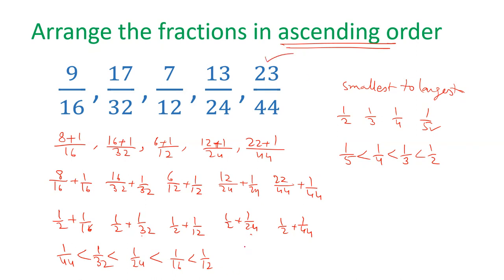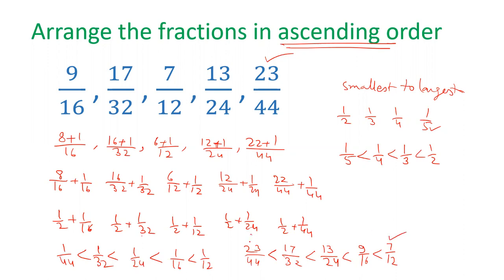So 1 by 44 plus half gives 23 upon 44. The next one is 17 by 32, then 13 by 24, then 9 by 16, and finally 7 by 12. The smallest fraction is 23 by 44 and the largest is 7 by 12.